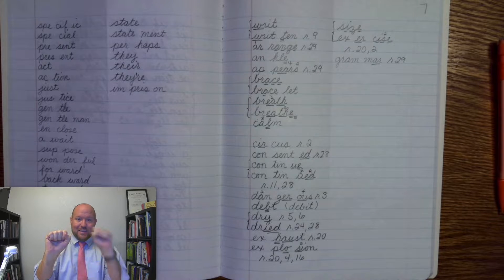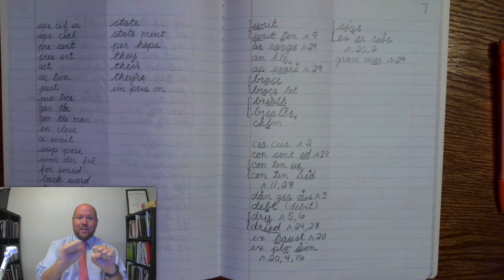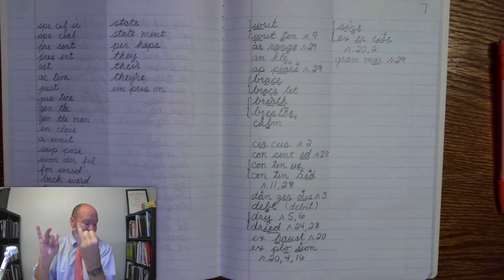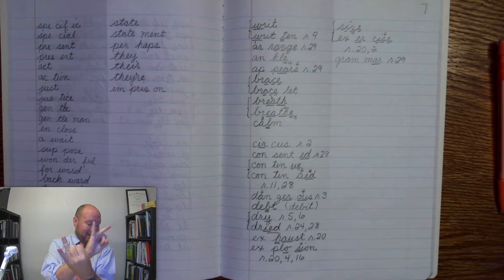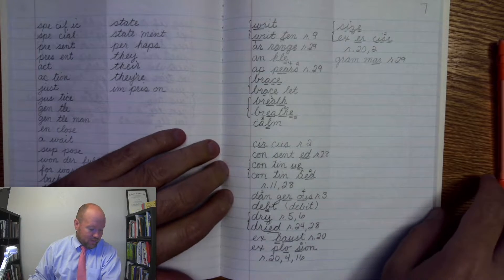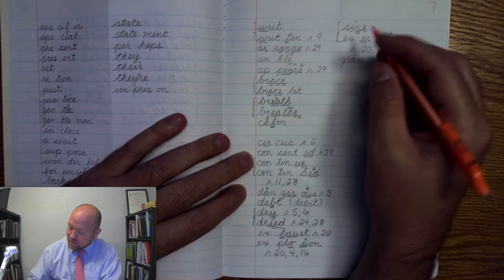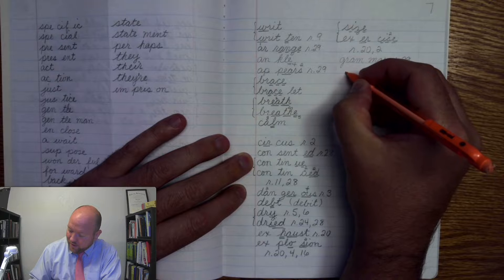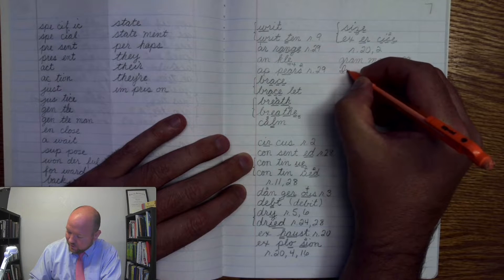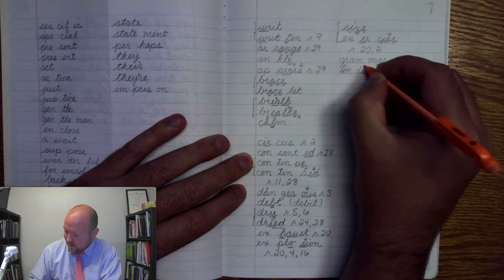Syllables. In, di, an. I-N, D-I, A-N. Indian. All right. Write it. In, capitalizing it. Di, an.